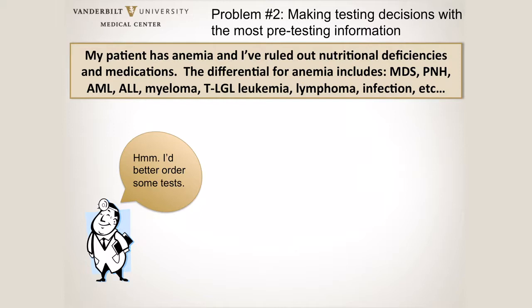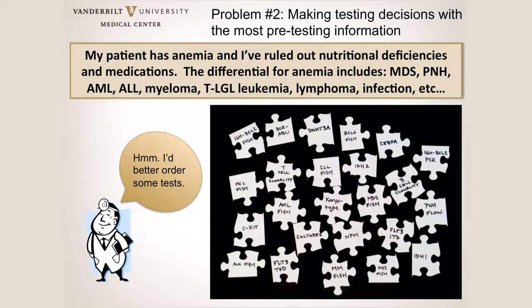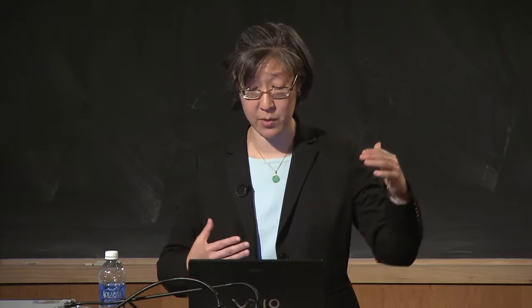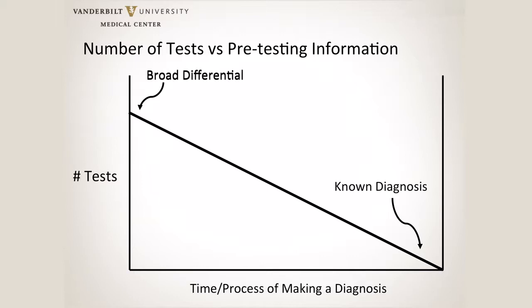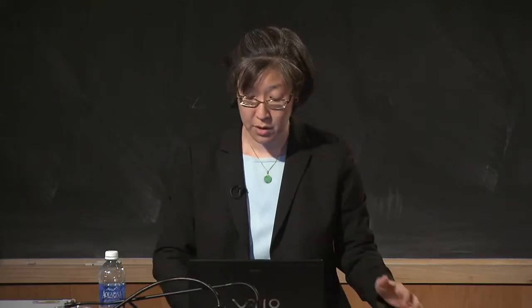We would like to make testing decisions with the most pre-testing information possible. But a very typical scenario is that a hematologist has a patient with anemia. They've ruled out iron deficiency and other nutritional deficiencies, but within hematopathology the differential for anemia is still vast. If you have a vast differential, there are a vast number of tests to interrogate all of those different entities. There's a direct correlation between the breadth of your differential and the number of tests needed to winnow it down to the diagnosis. We want to push that decision-making as far as possible with the most available information.